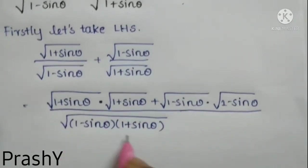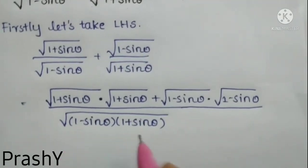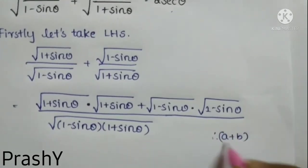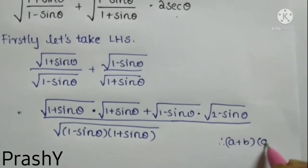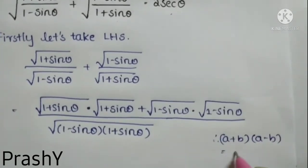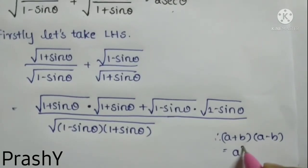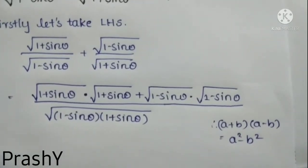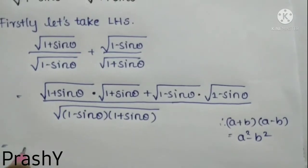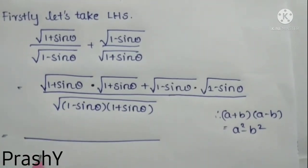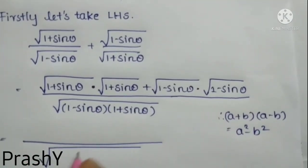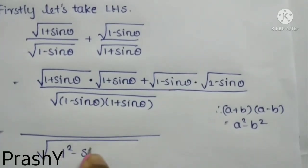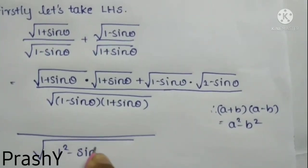If we observe this denominator, it is in the form of (a + b) into (a − b), so this can be written as a² − b². So we have root over 1² − sin² θ.